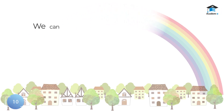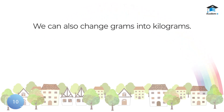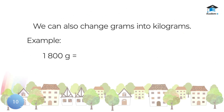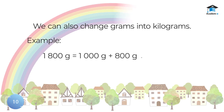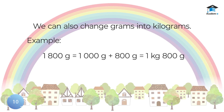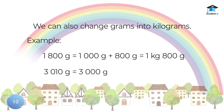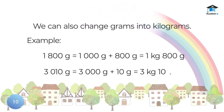We can also change grams into kilograms. For example, 1,800 grams is equal to 1,000 grams and 800 grams, which is equal to 1 kilogram 800 grams. Another example: 3,010 grams is equal to 3,000 grams and 10 grams, which is equal to 3 kilograms 10 grams.